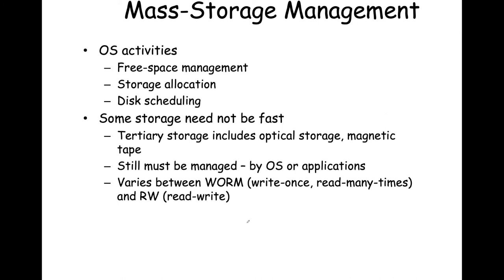OS storage management activities include: free space management — handling what to do with free space, possibly moving things around to fit better like a jigsaw puzzle; allocation of storage — carving out parts of memory owned by a particular process; disk scheduling — deciding which parts of disk to read and when, because if you read from opposite extremes of the disk constantly, the read-write head movement adds up and slows performance. Some storage doesn't need to be fast — archives use tertiary storage like optical drives and magnetic tapes, but these still have to be managed by the OS.